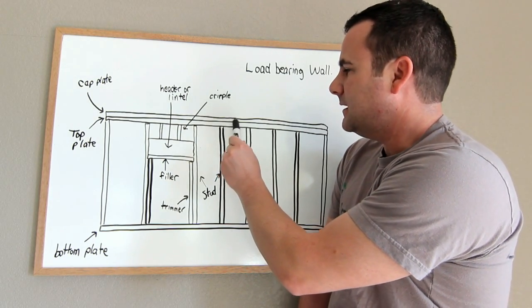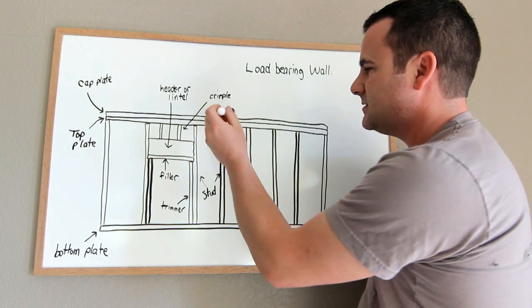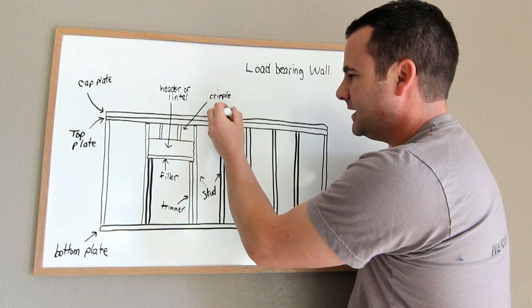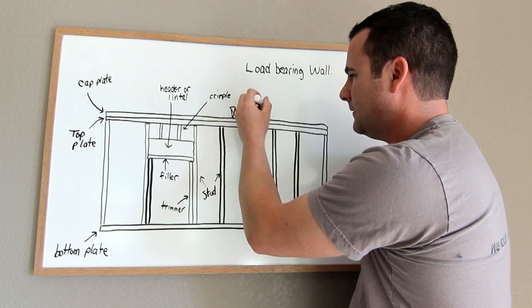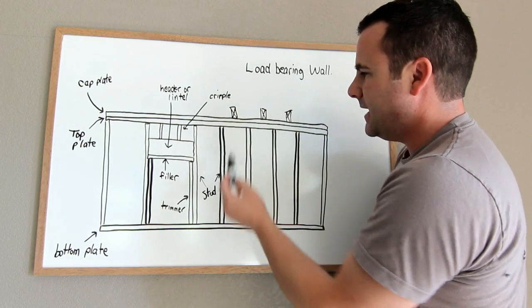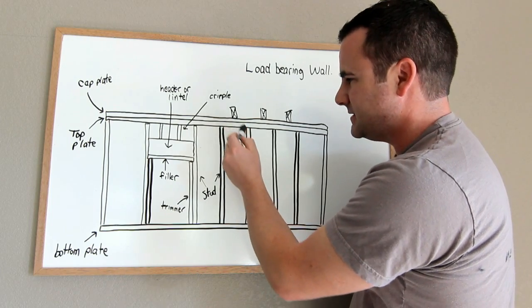In other words, you need the two top plates in order for a load bearing wall. So that way, let's say a truss lands here and here and here, then it has enough bearing. These two top plates can transfer down through the studs.